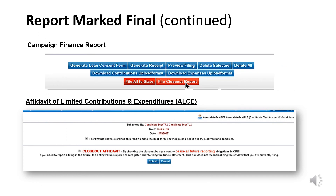To submit a new campaign finance report and mark it as final, log into MDCRIS and select View/File Pending Transactions, then select File Closeout Report. To submit an amended campaign finance report and mark it as final, log into MDCRIS and select Amend Transactions, then select File Closeout Report. If filing a final affidavit, select File Affidavit/ALCE from the left side menu, then check the box for Closeout Affidavit.